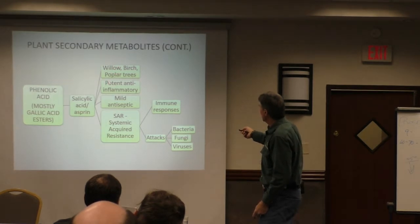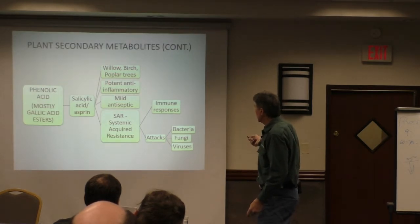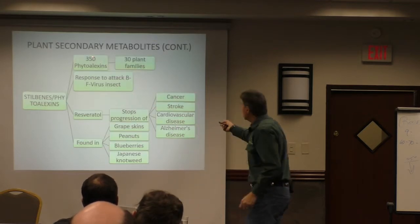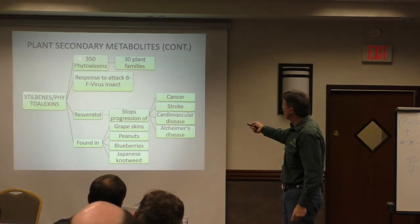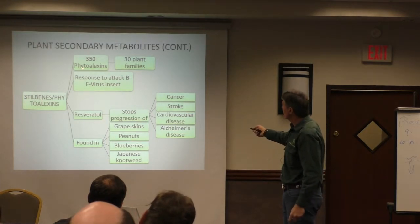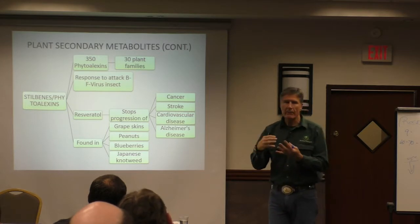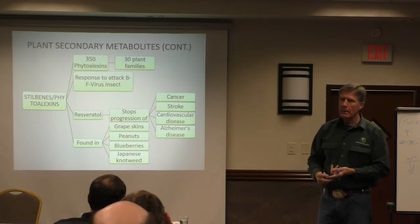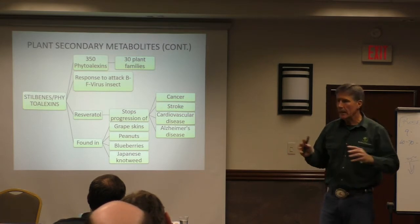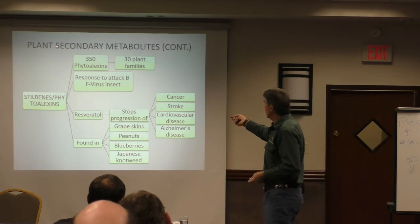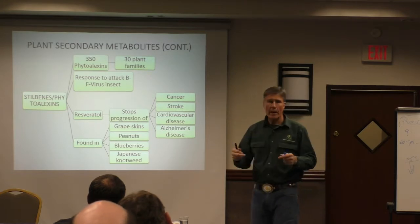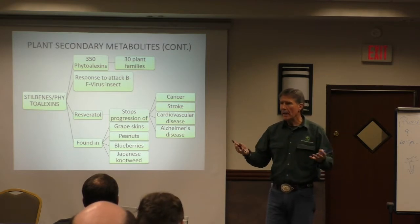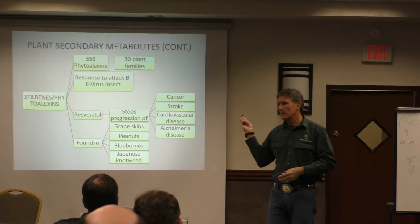Willow birch tree - potent anti-inflammatory, antiseptic. Salicylic acid - those are your aspirin, it comes from here. Right here, you have over 30 plant families that produce these phytoalexins, and these are the guys that go attack viruses, bacteria, fungi, and insects. Your phytoalexins are your plant's chemistry - they're all part of your plant's secondary metabolites that require lots of trace minerals to activate the enzymes to utilize your NPK, carbon, hydrogen, oxygen, to make this stuff.